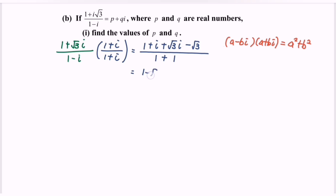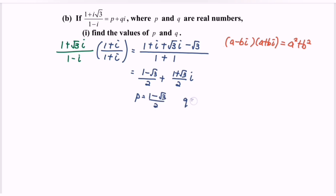Simplifying gives (1 - √3)/2 + [(1 + √3)/2]·i. So as a conclusion, the value of p is equal to (1 - √3)/2, and the value of q is equal to (1 + √3)/2.